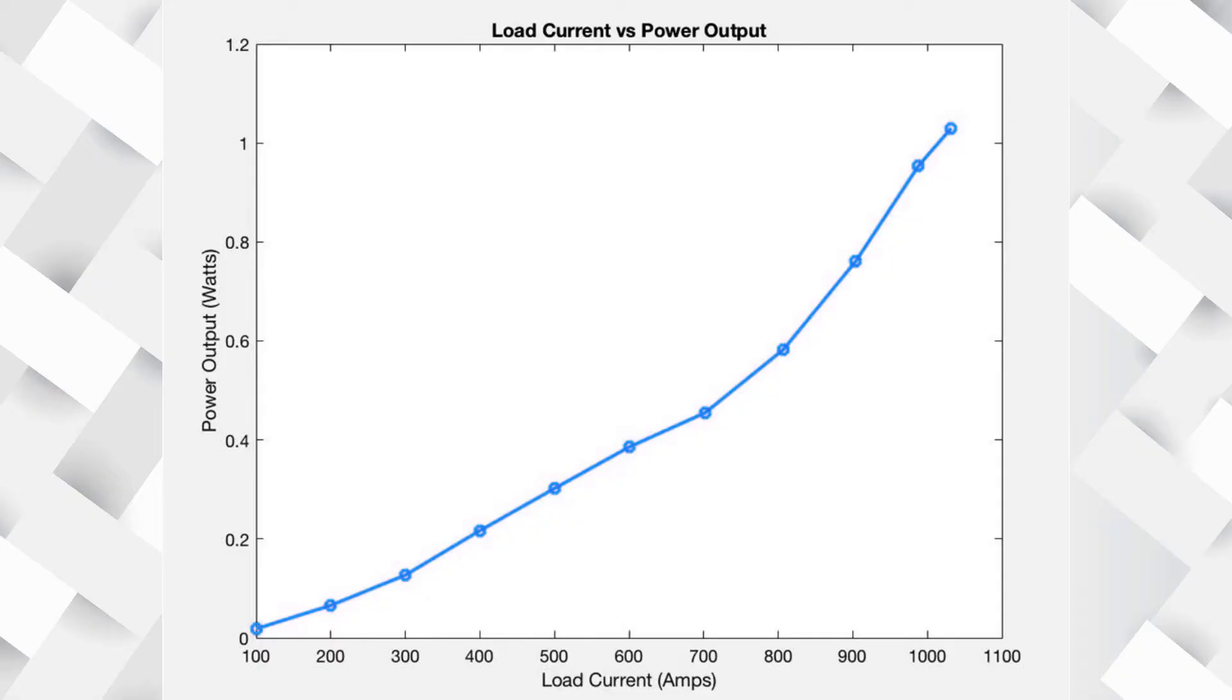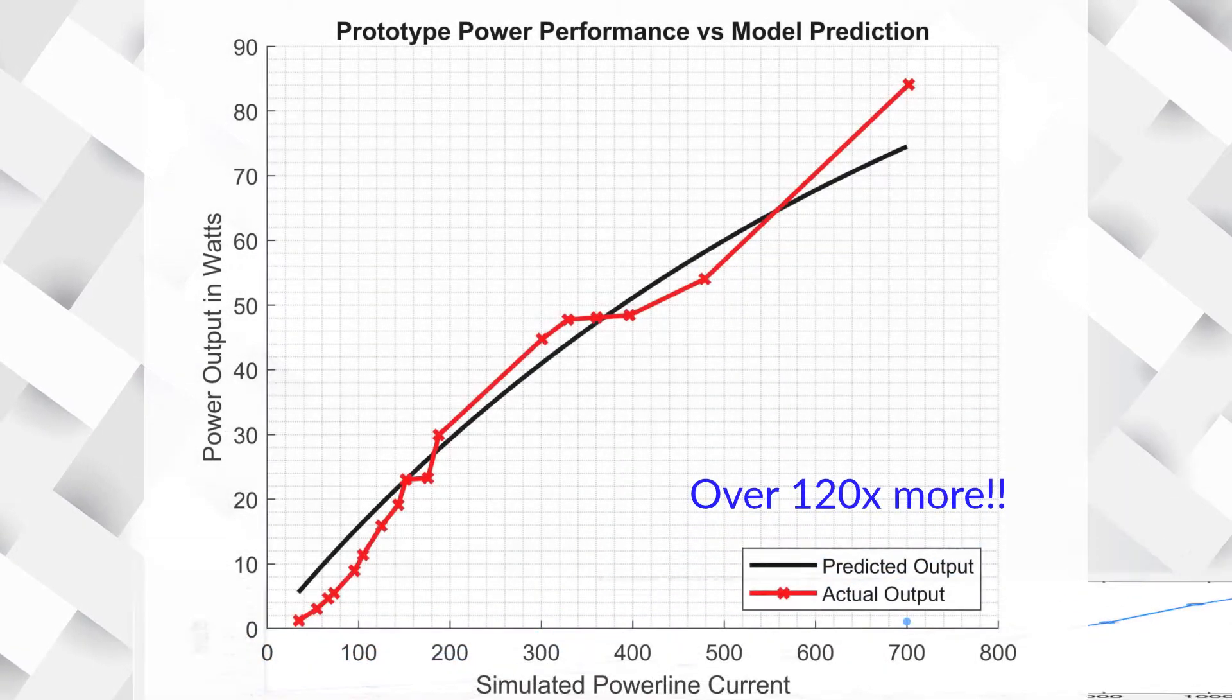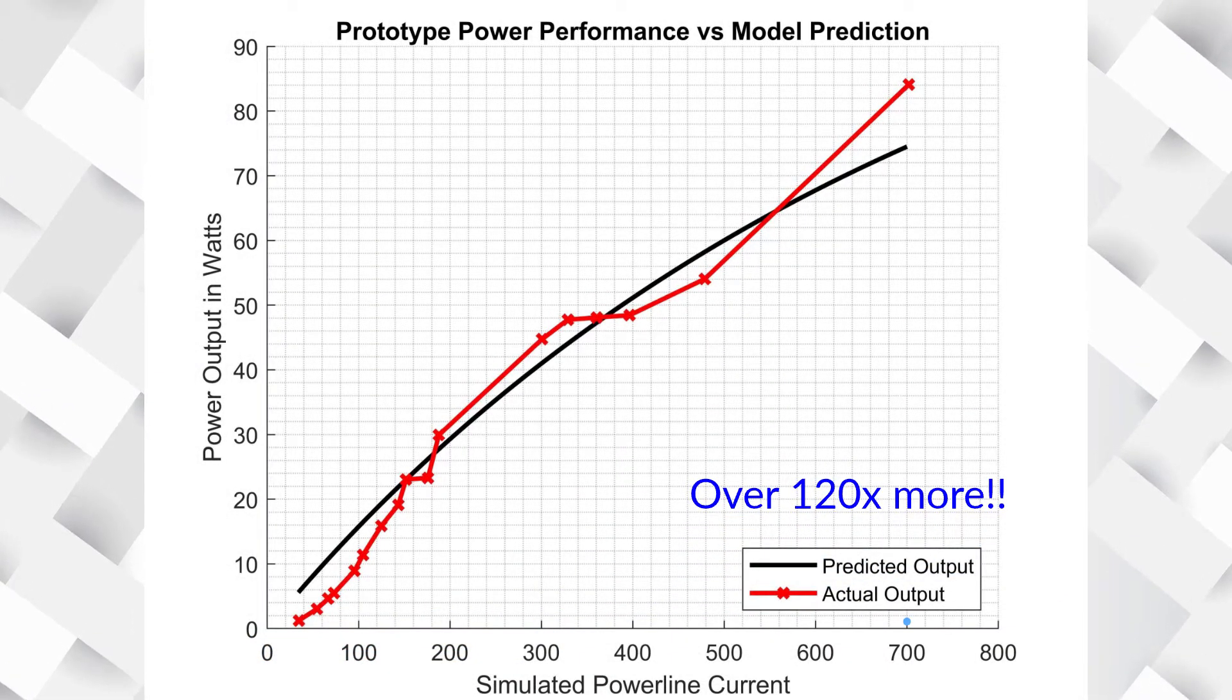At an average power line, the drone was previously collecting under half a watt power, enough to charge a drone in three days. But as a result of our improvements, it collects over 60 watts at that same power line current, which is enough to charge the drone in an hour.